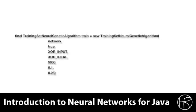If you do have a training set, use the training set neural genetic algorithm class that you see here. You pass in the network you want to train. True means that the network should be randomized for each life form. XOR input is the input data. XOR ideal is the ideal values for that input. 5000 is the number of life forms in the gene pool. 0.1 means 10%, the top 10% will be chosen to mate, and 0.25 means that the top 10% will mate with any organism in the top 25%.